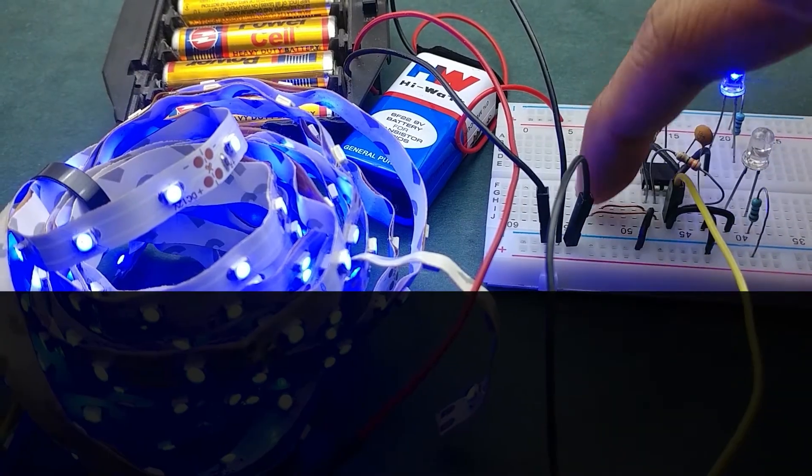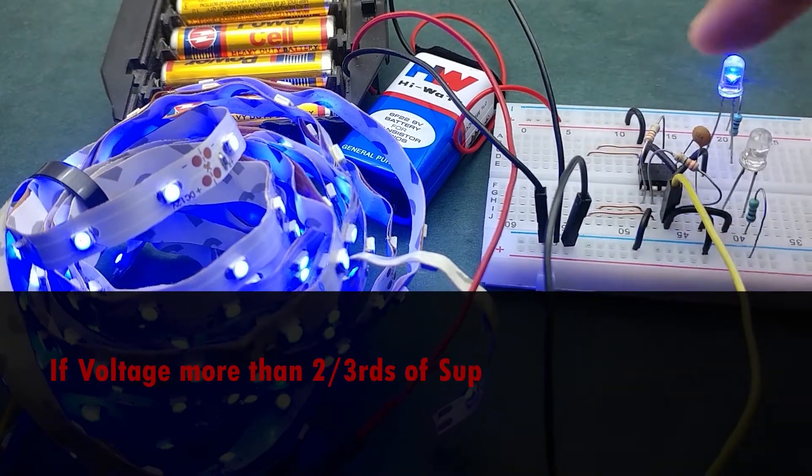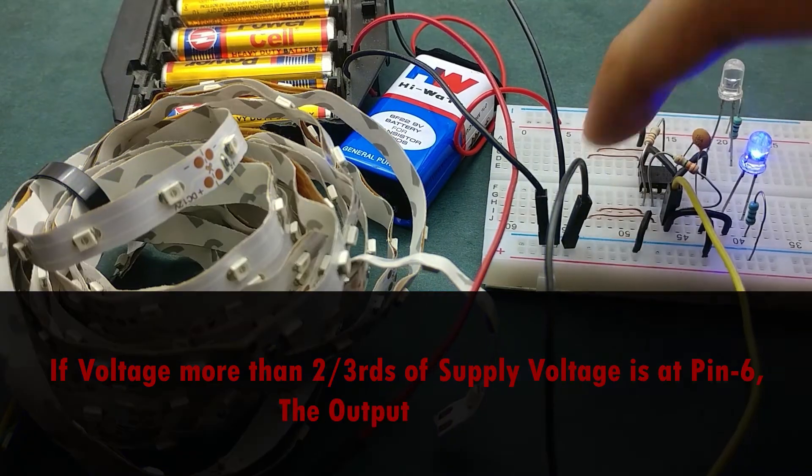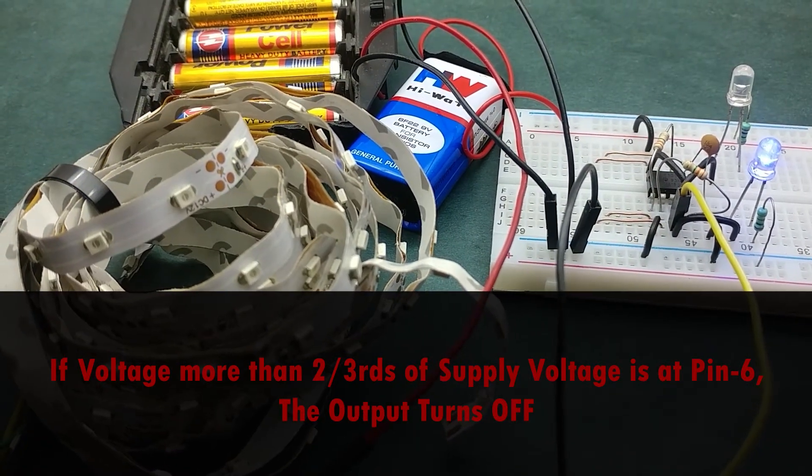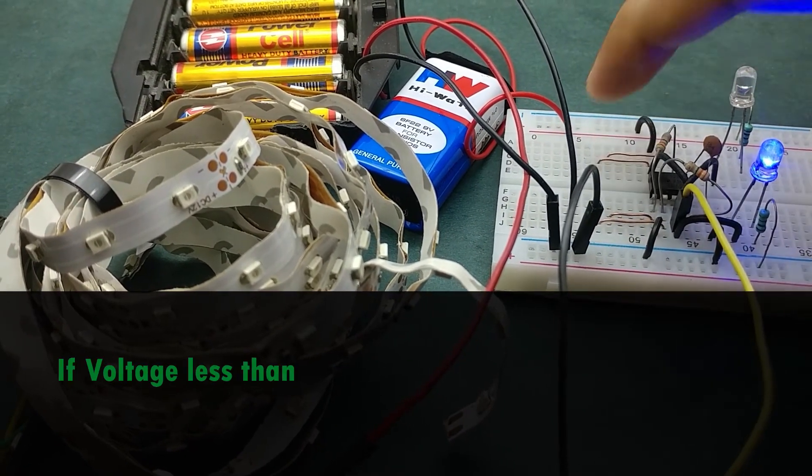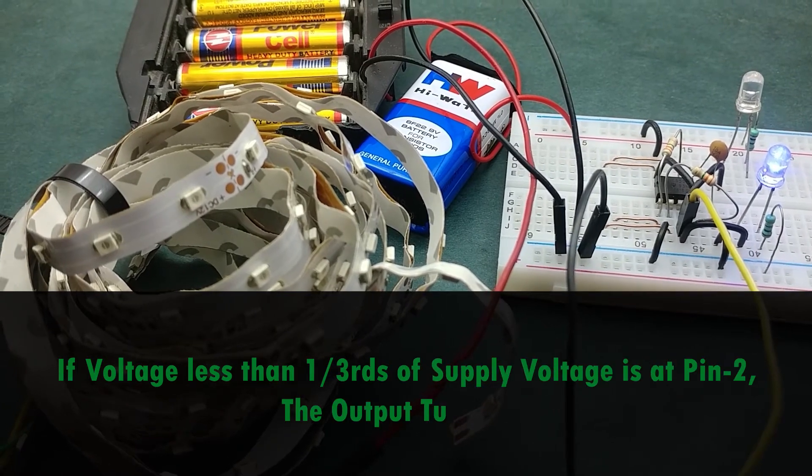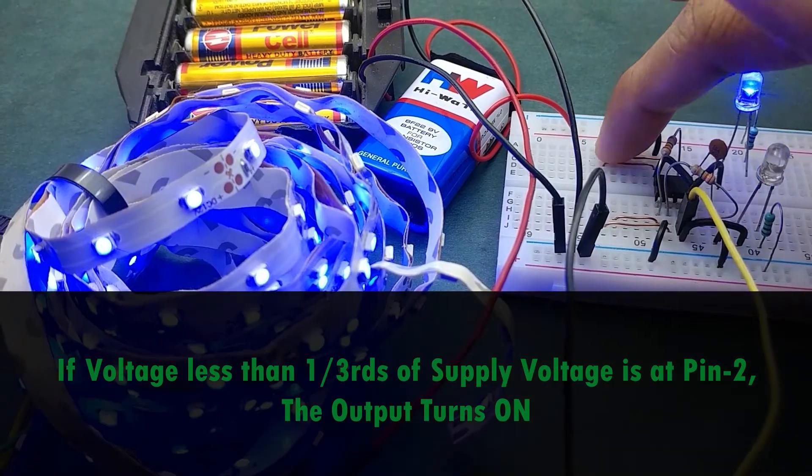In the process, we learned that if a voltage more than 2 thirds of the supply voltage is applied at pin 6, it turns off the output. And if a voltage less than 1 third of supply voltage is applied at pin 2, it turns on the output irrespective of the voltage at pin 6.